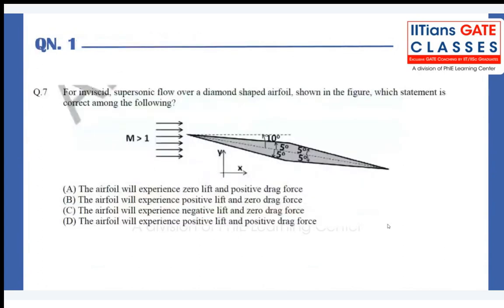Question one says: for an inviscid supersonic flow over a diamond-shaped aerofoil as shown in the figure, which statement is correct? Option A: aerofoil will experience zero lift and positive drag force. Option B: positive lift and zero drag force. Option C: negative lift and zero drag force. Option D: positive lift and positive drag force.